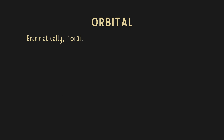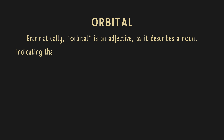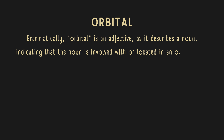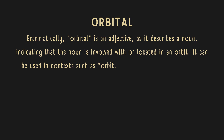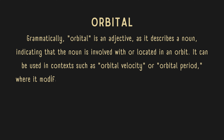Grammatically, orbital is an adjective as it describes a noun, indicating that the noun is involved with or located in an orbit. It can be used in contexts such as orbital velocity or orbital period, where it modifies technical terms in astronomy or physics.